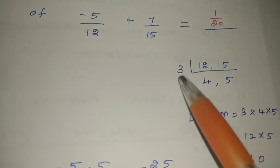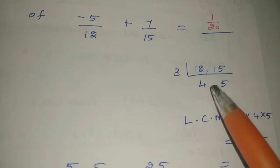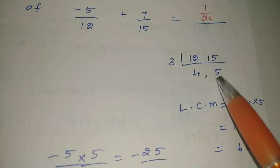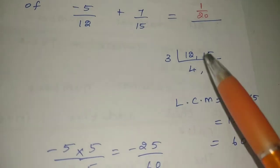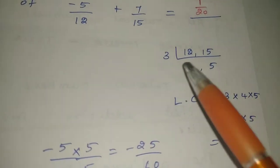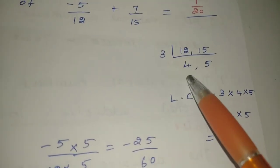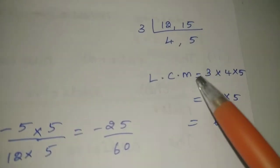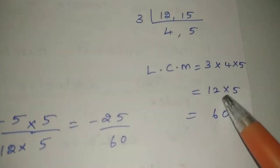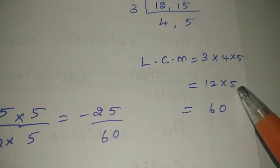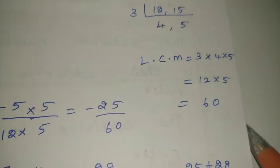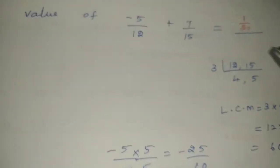We go through the tables: 1 times, 3 times, 4 times, 5 times. There are different tables. We multiply 3 × 4 × 5. So 3 goes into 12, and 12 × 5 is 60. So LCM is 60. The next values are 5 × 12 and 7 × 15.